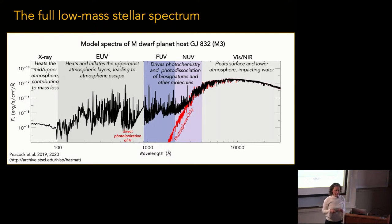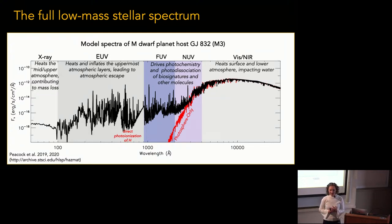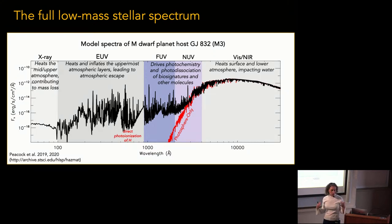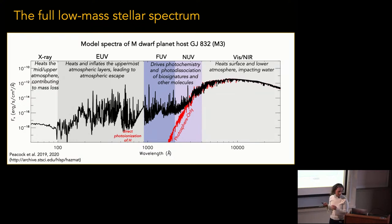Do we have any constraints in the EUV, or is that just data-free? We have a few constraints from EUVE — the Extreme Ultraviolet Explorer — that looked at six M-stars, with detections of classics like AU Mic and AD Leo. But the challenge, and why we don't just have an EUV space telescope, is that the ISM absorbs most of the EUV, so we will never be able to observe EUV from the vast majority of exoplanet hosts. Our strategy has been to do the best job predicting it, and focus on the FUV and near-UV.